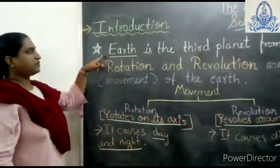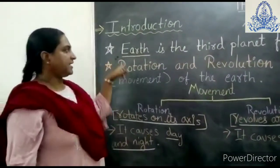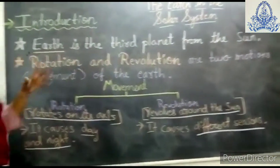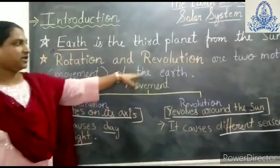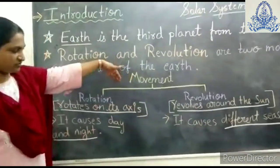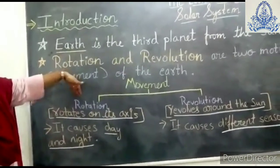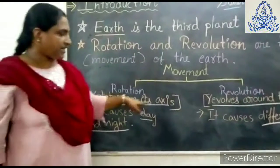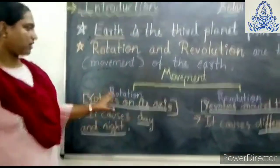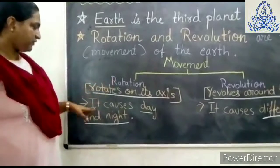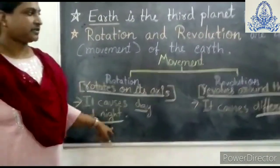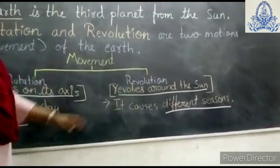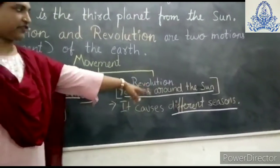Earth has two motions: rotation and revolution. Rotation means the Earth rotates on its axis, and from that rotation we get day and night. Revolution means the Earth revolves around the sun, and it causes different seasons.